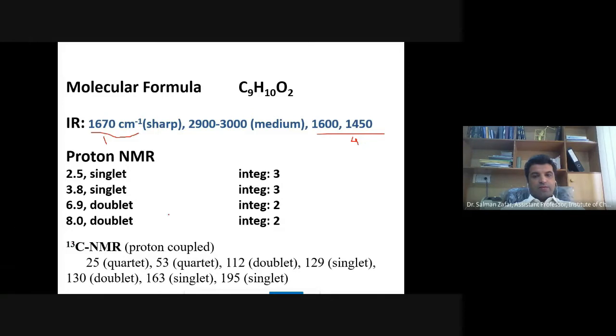Then we have a three proton singlet at 3.8, so CH3 attached to oxygen. And then we have two doublets for two protons each, and the chemical shift values say that these are aromatic protons. If you have such a situation, it means it's a para-disubstituted benzene ring. So you have a para-disubstituted benzene ring, and we also have a carbonyl group and we have methoxy as well.